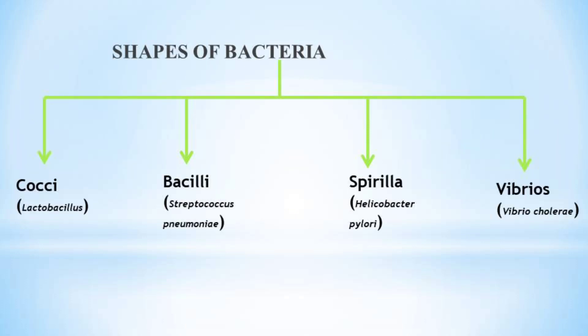There are four main shapes of bacteria. The first is Cocci (singular: Coccus), which are round or spherical-shaped bacteria — for example, Lactobacillus acidophilus. The second shape is Bacilli (singular: Bacillus), which are rod-shaped bacteria — for example, Streptococcus pneumoniae. The third shape is Spirilla (singular: Spirillum), which are corkscrew-shaped bacteria — for example, Helicobacter pylori.